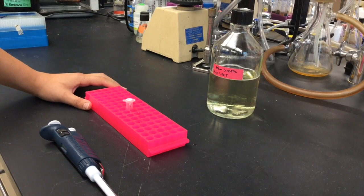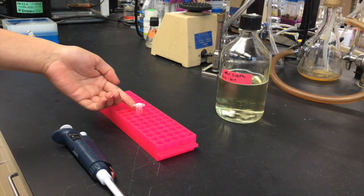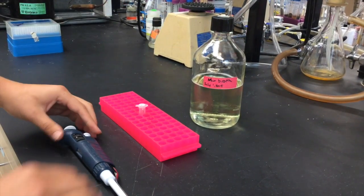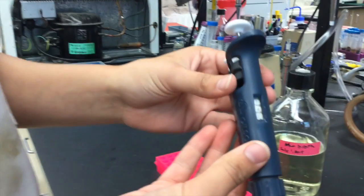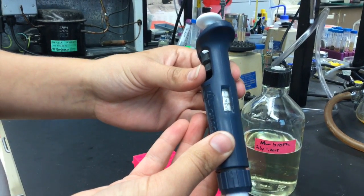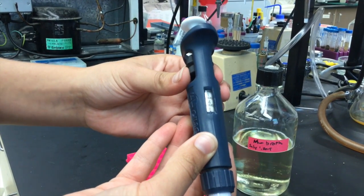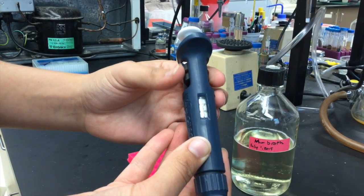We need to transfer 150 microliters of this antibiotic solution into this bottle of medium. So we need to set the P200 to 150. Set the desired volume by turning the centrally located rings clockwise to increase the volume or counter-clockwise to decrease the volume.